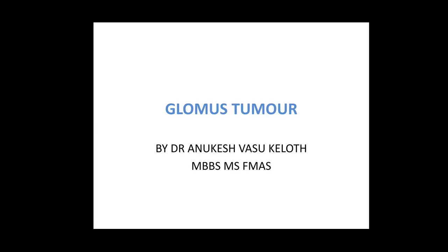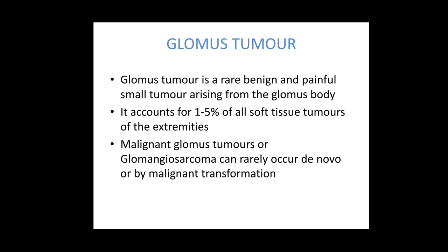Today we are going to talk about glomus tumour. Glomus tumour is a rare, benign and very painful small tumour arising from the glomus body. It accounts for 1-5% of all soft tissue tumours affecting the extremities. It is commonly benign. However, a malignant glomus tumour, otherwise known as glomangiosarcoma, can very rarely occur de novo or by malignant transformation of a glomus tumour.